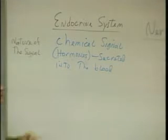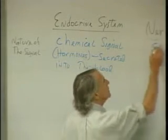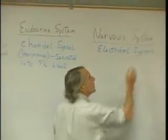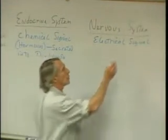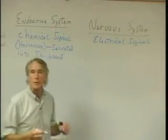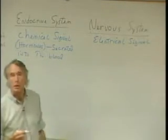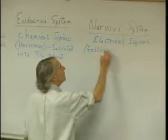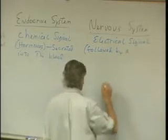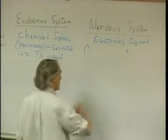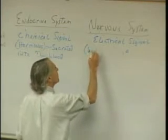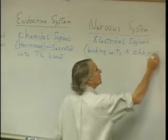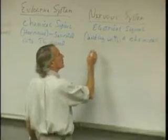In contrast, the nervous system uses an electrical signal. Although, at the end, when that signal gets to the effector organ or to the next neuron involved, that signal will become a chemical — we call it a neurotransmitter. So it's an electrical signal ending with a chemical signal. We call those chemicals neurotransmitters.